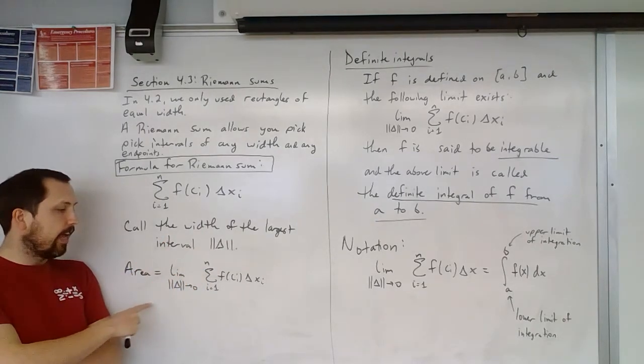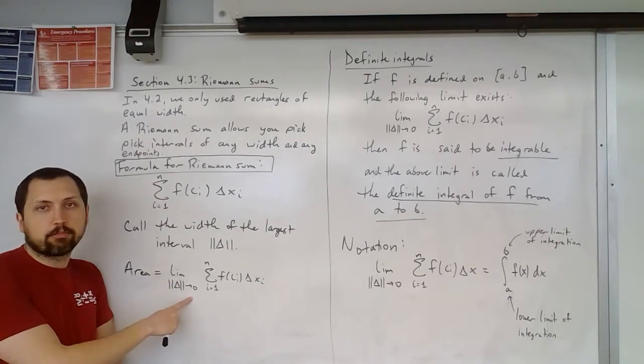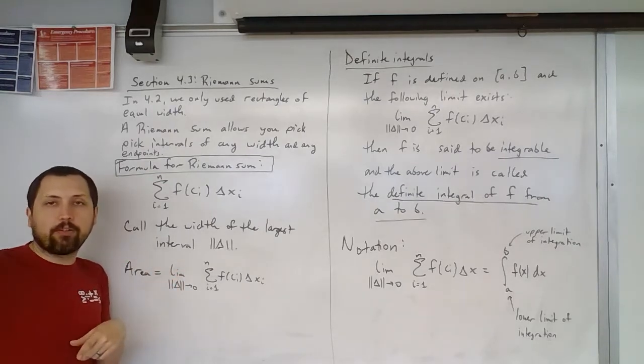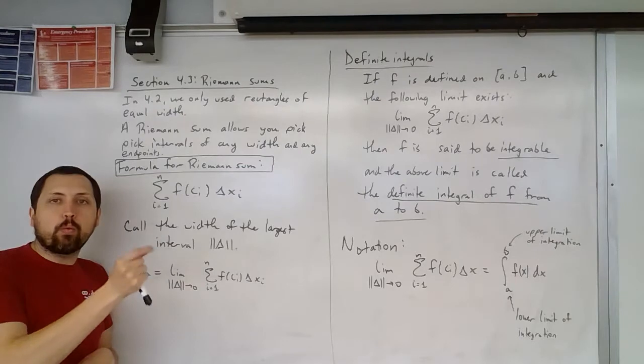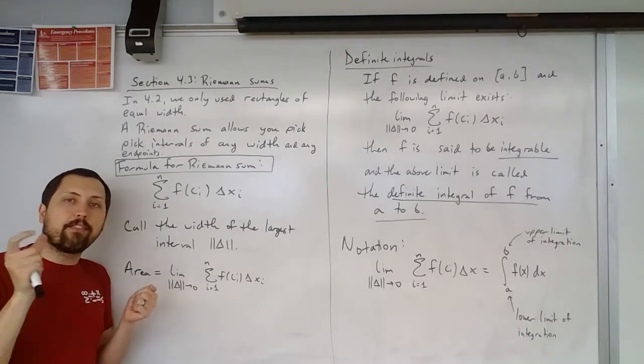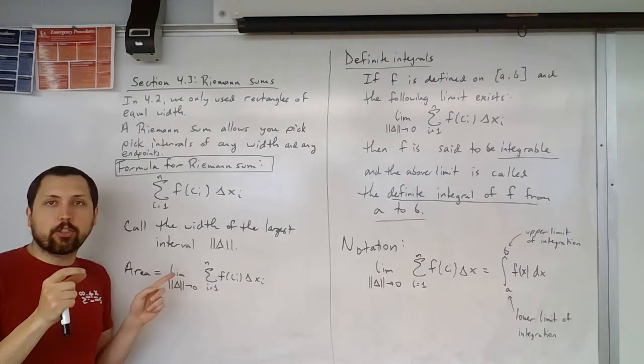Then our area is going to be the limit as this largest width goes to zero. So in our example, we said N went to infinity, the limit as N tends to infinity, because when you have equal widths, that's perfectly fine to do. If you don't have equal widths, then you can't just be okay with N going to infinity.